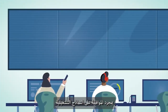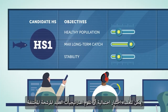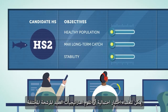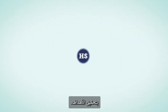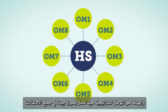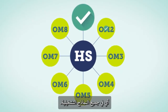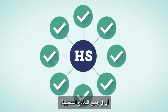Once operating models are agreed, scientists can test the likelihood that various candidate harvest strategies will achieve the objectives. The goal is to find a harvest strategy that performs well in all scenarios, that is, in all operating models.